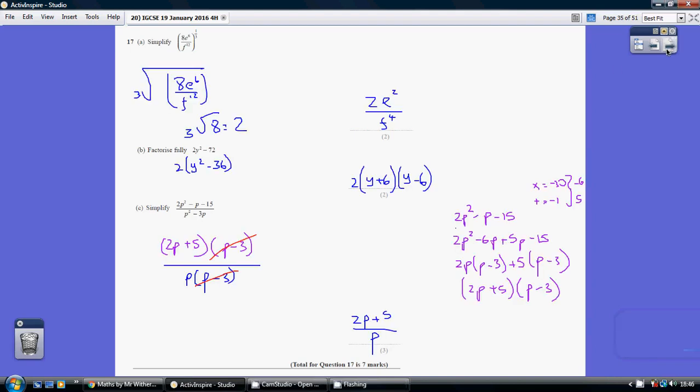Question 17. Remember, to the power of a third is just cube rooting everything, so we want to apply this to each of the terms. The cube root of 8 is 2. Now 8 to the power of 6, to the power of a third, is just 6 times a third, which is 2, so that's e squared. Similarly, on the denominator, 12 times a third is 4, so that's f to the 4 in the denominator.